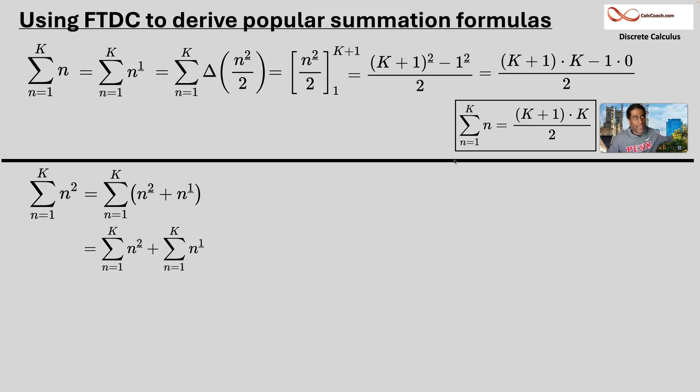And we can anti-forward difference both of those. Add one divided by the same thing. So we have n falling three over three. Forward difference on that. N falling two over two. Forward difference on that. And then we just apply the fundamental theorem of discrete calculus to both of these.